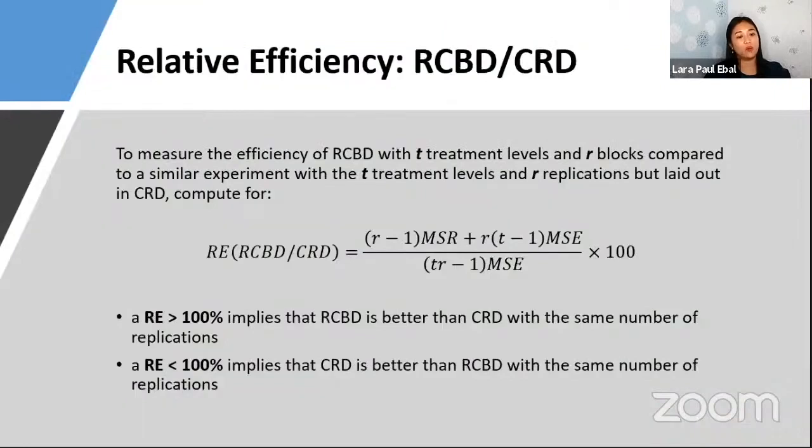Now, we can compare the efficiency between this RCBD and this CRD. So to measure the efficiency of RCBD with that of the CRD, we can use this formula. And if the result using this formula is greater than 100%, then this implies that RCBD is better than the CRD.